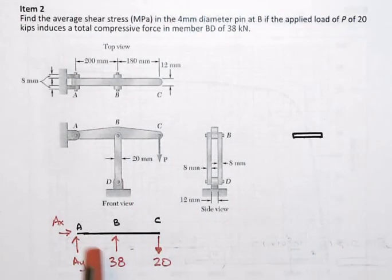When we go look at the bar ABC, the problem statement already tells us what the compressive force is in member BD. In other words, this force that gets transferred into bar ABC through the pin.